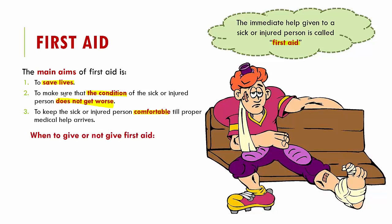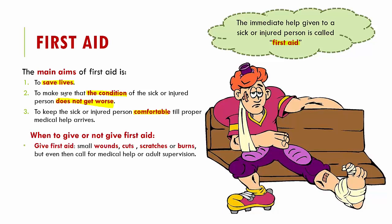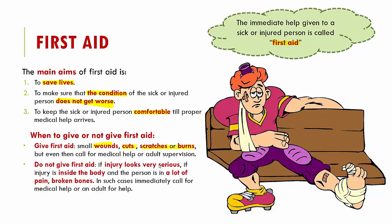We also need to understand when we should give first aid and when we should not. We give first aid when the wound is quite small — small cuts, scratches, or small burns — but even then, call for medical help or adult supervision. When not to give first aid: if the injury looks deep or very serious, or if the person is not bleeding externally but is in a lot of pain — that could mean a broken bone. For broken bones, we cannot give first aid; instead, immediately call for medical help or the nearest adult.